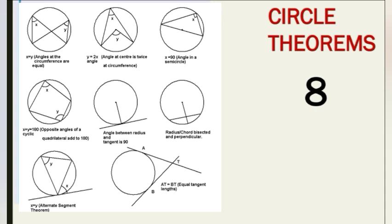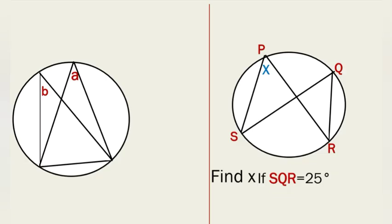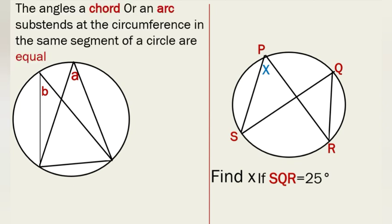Let's start with the very first theorem — Rule number 1. It states that the angles a chord or an arc subtends at the circumference in the same segment of a circle are equal. Looking at this picture, angle A and angle B arise from the same chord — the red chord down there — and also the same arc, indicated by the red sign. They are also in the same segment, so we say angle A and angle B are equal.